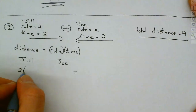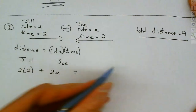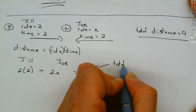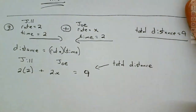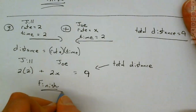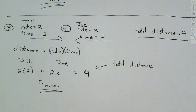For Jill: 2 times 2. For Joe: the rate is unknown X, so that's 2 times X. Those two distances add to equal the total of 9. Because they meet after 2 hours, each one is on the road for 2 hours. Multiply, move the 4 over, and divide by 2. Can you finish it from here?